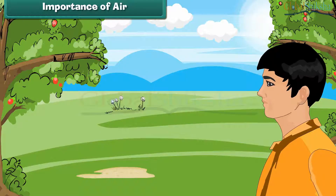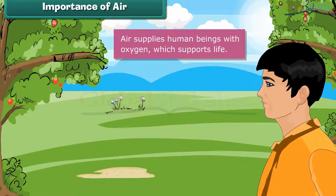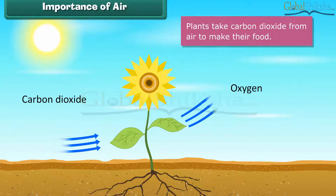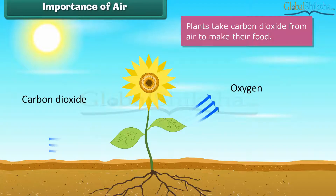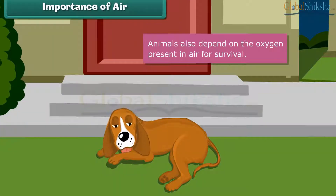Importance of air. Air supplies human beings with oxygen, which supports life. Plants take carbon dioxide from air to make their food. Animals also depend on the oxygen present in the air for survival.